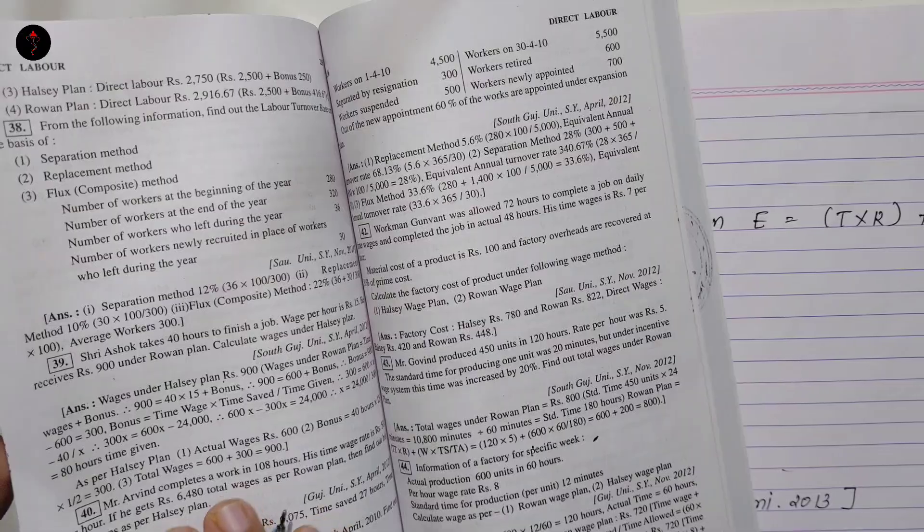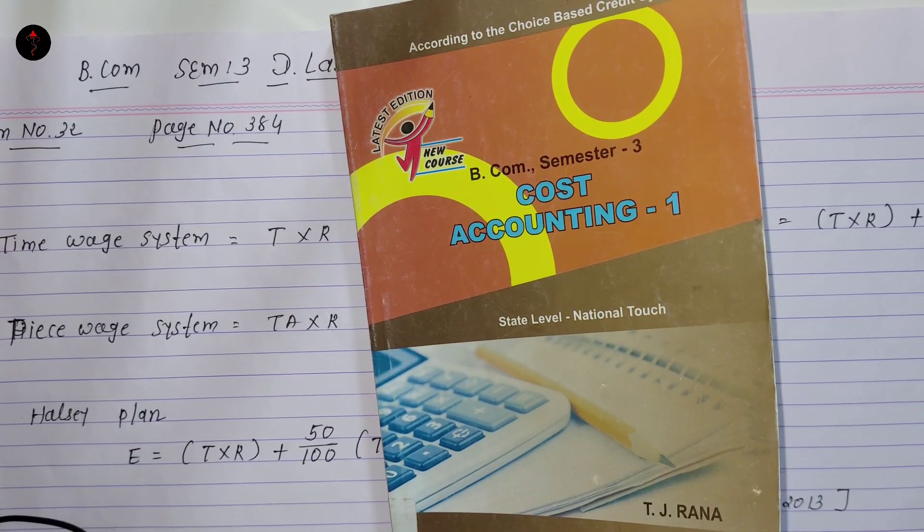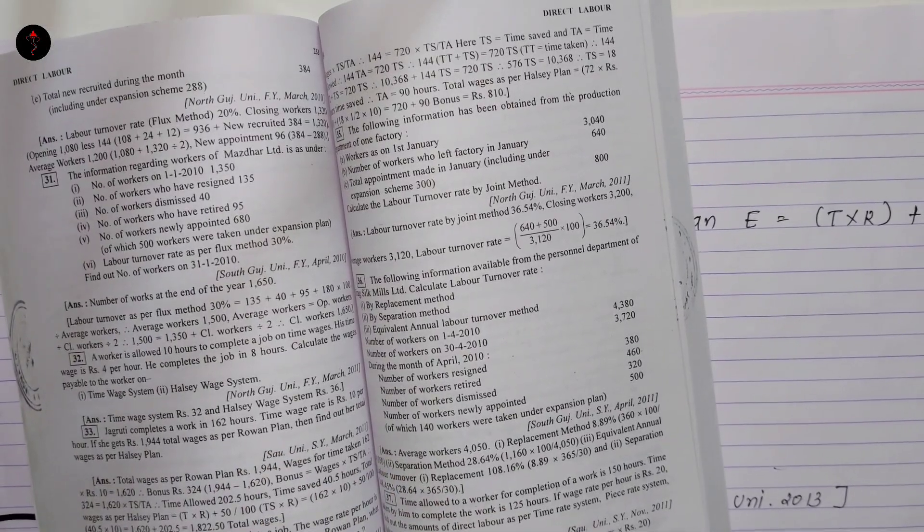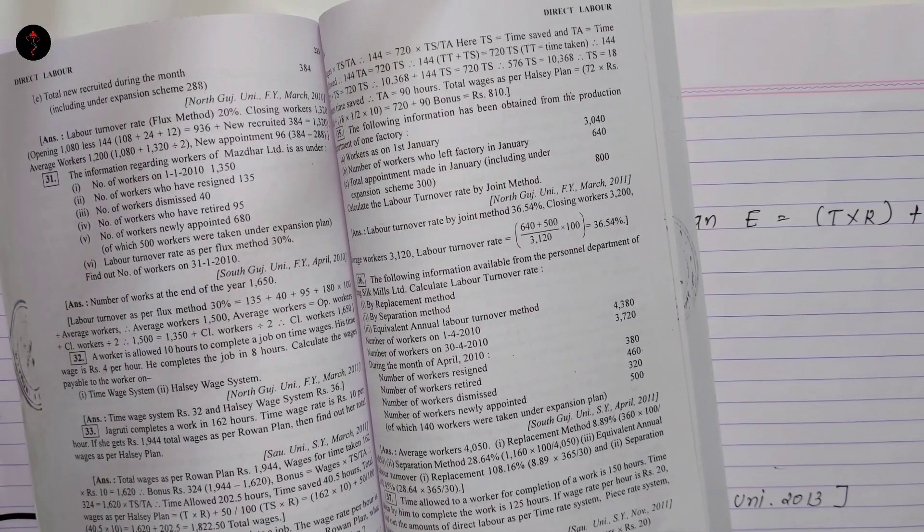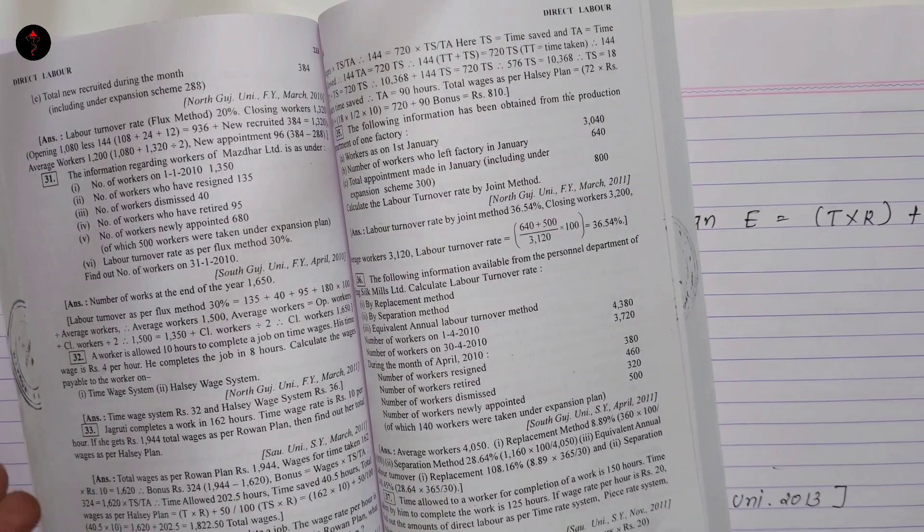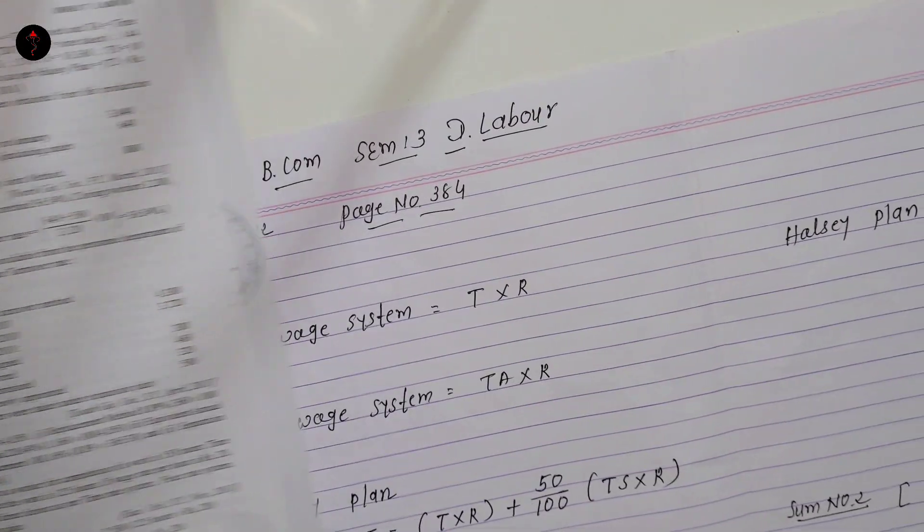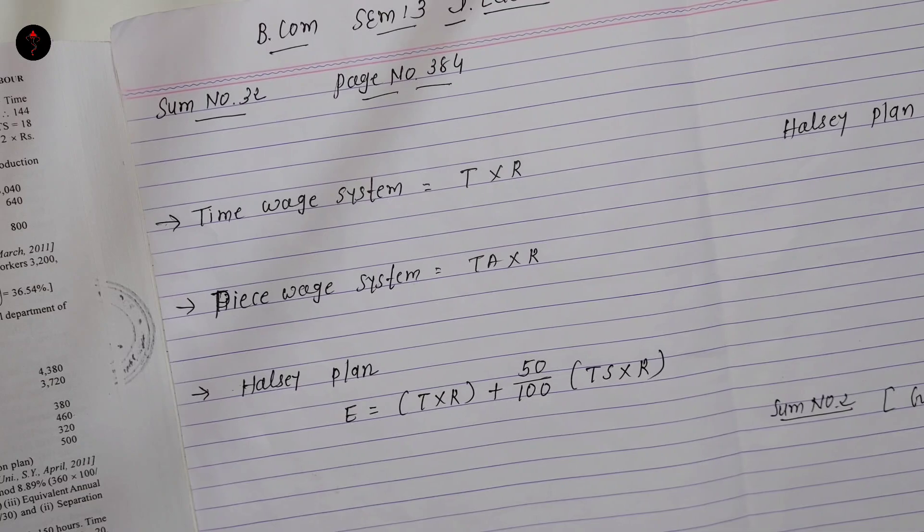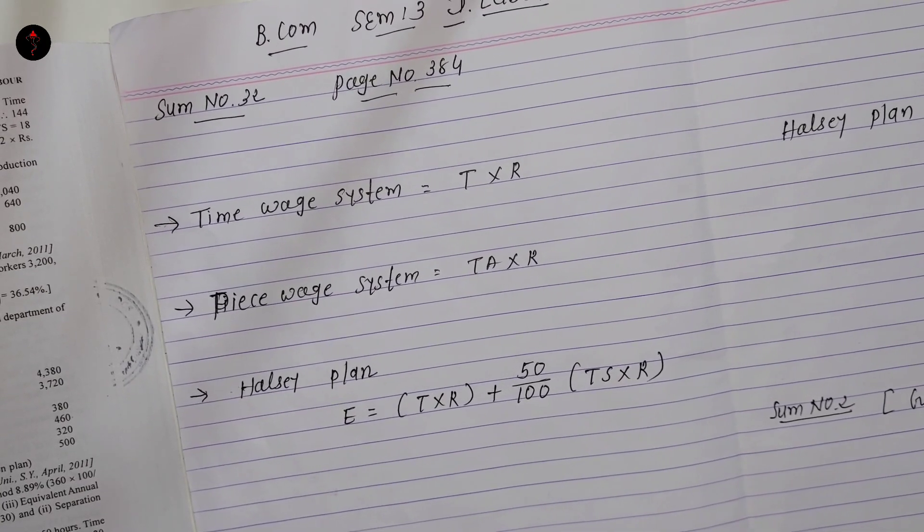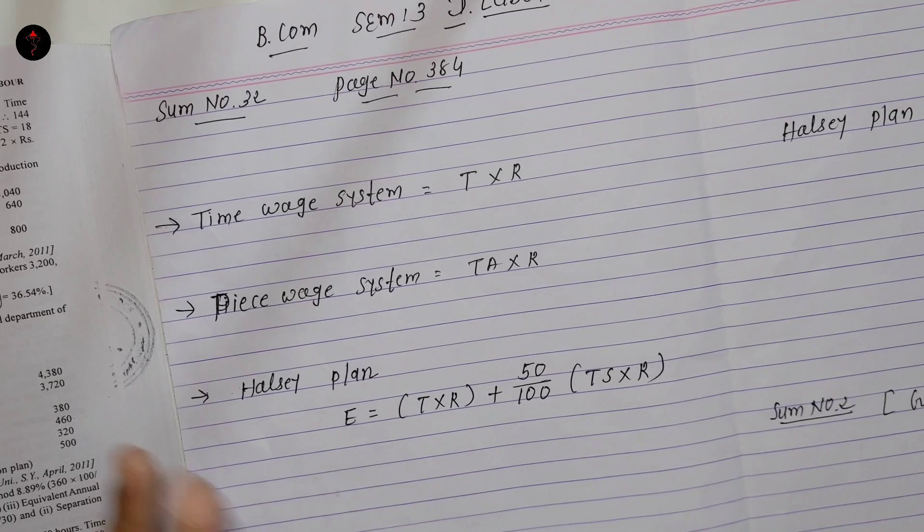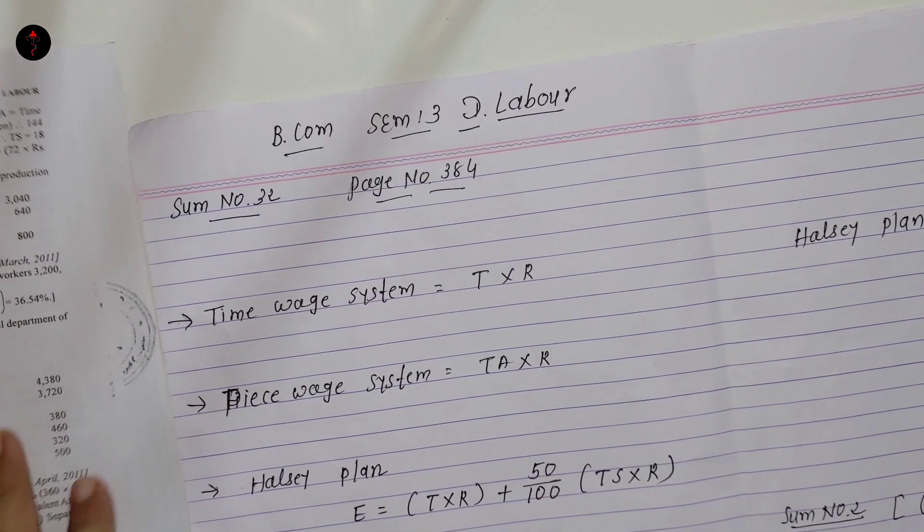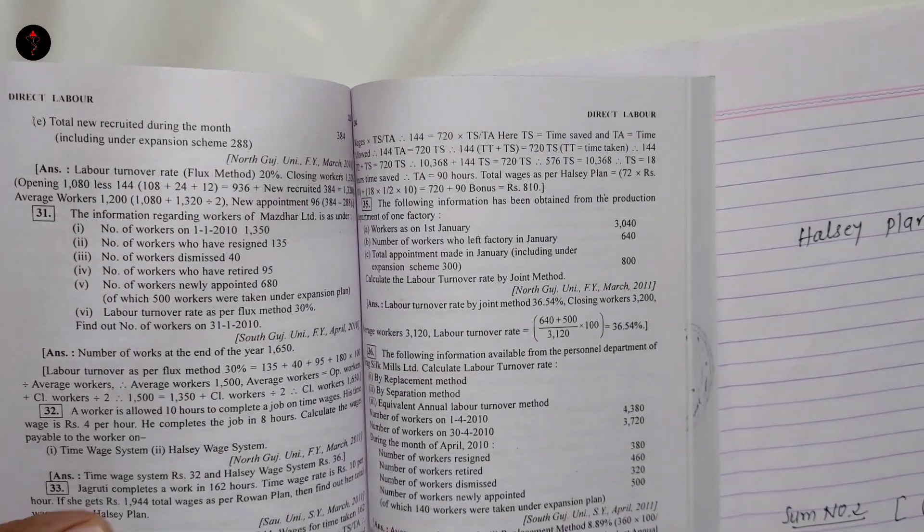We will start with Sum Number 32. I am using the 2019-2020 edition. Sum Number 32 is on page 384 of Sudhir Prakashan. The first sum covers time wage and piece wage systems, and how to find direct wages, then Halsey and Rowan Plans which I taught you the formulas for in the last video. Now you will get the sum in this video.